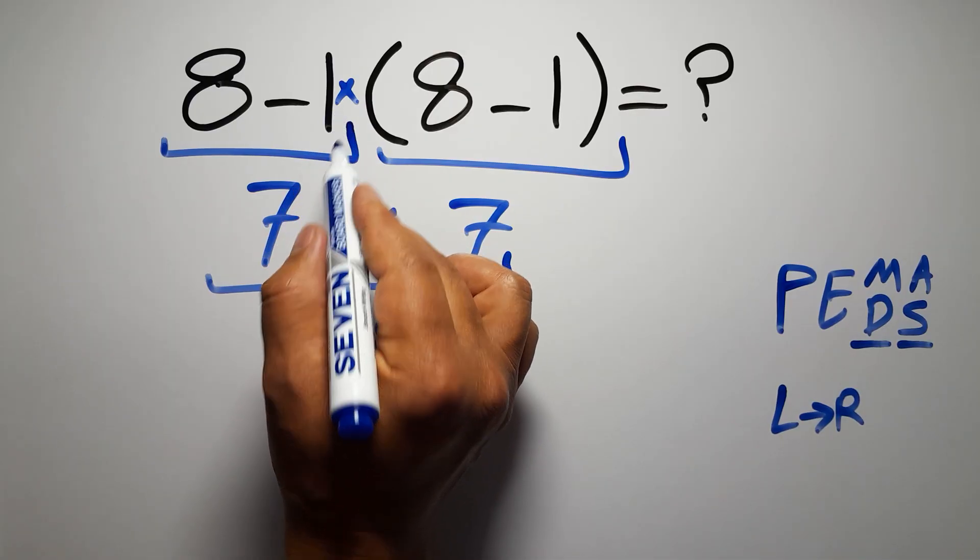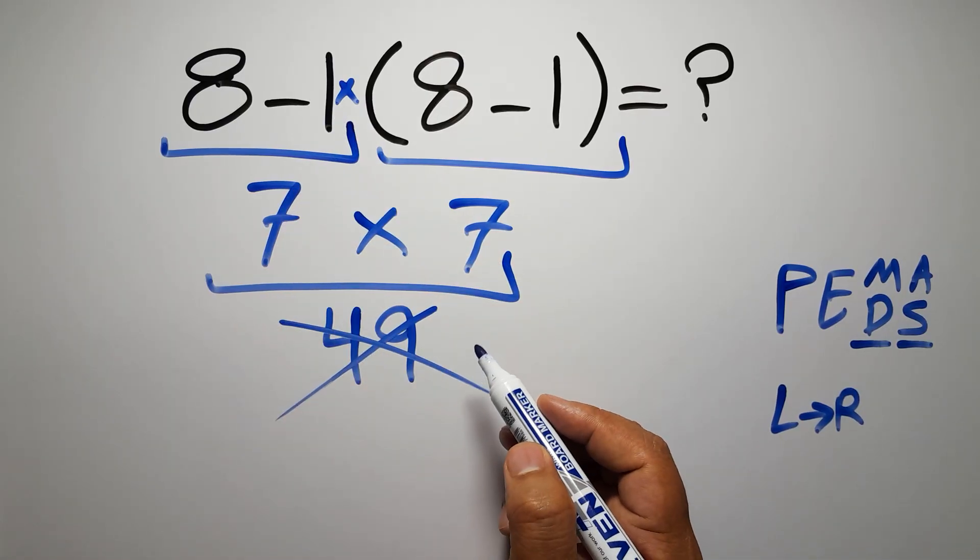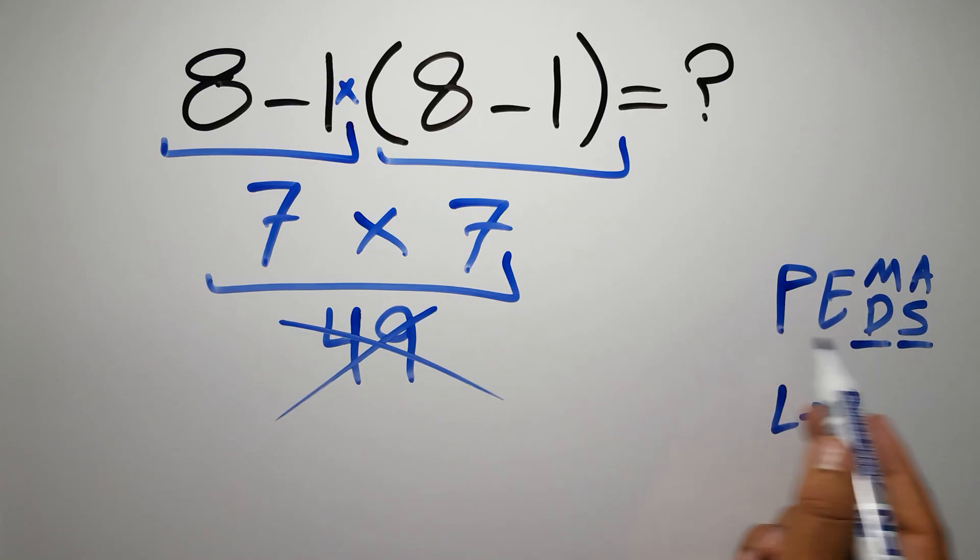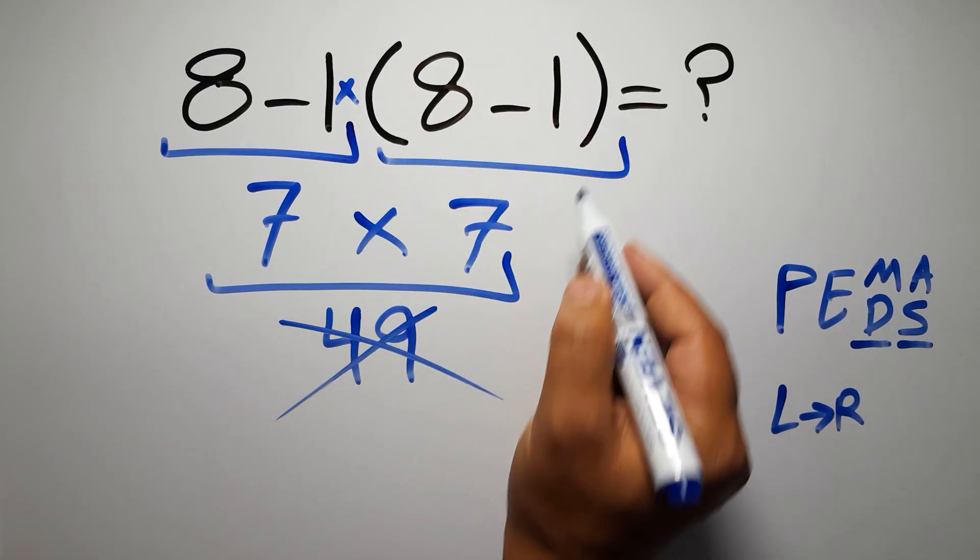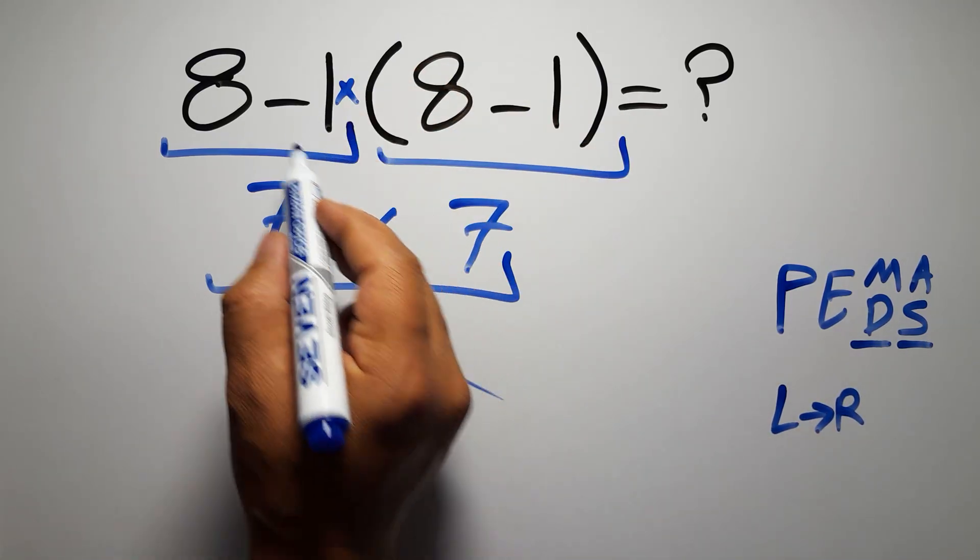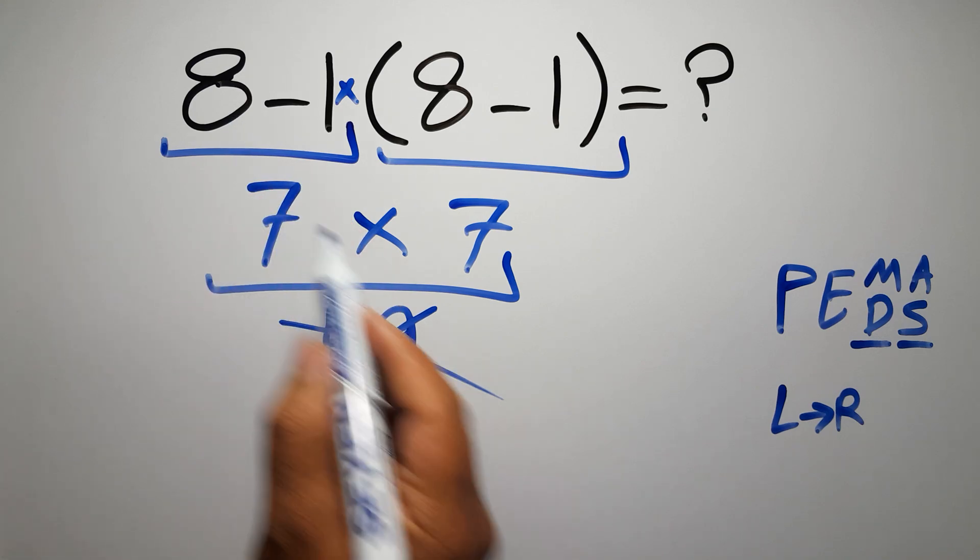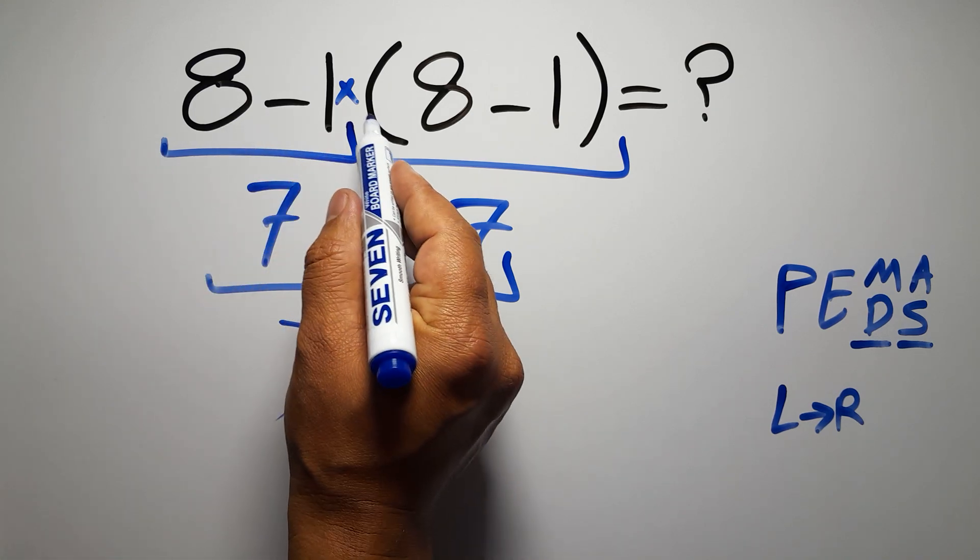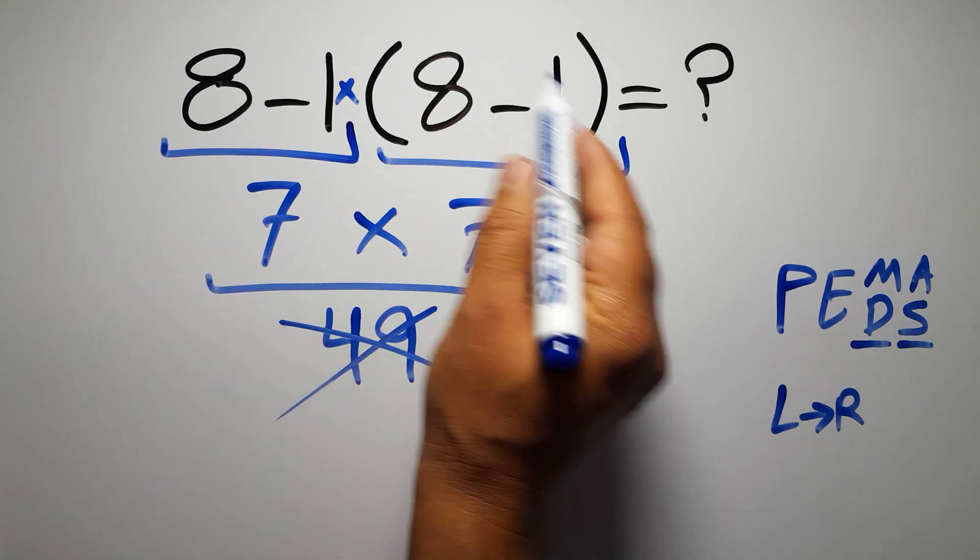Okay, so according to PEMDAS, first we have to do this parentheses, then this multiplication, and finally this subtraction. If we do this subtraction before this multiplication or this parentheses, it is wrong.